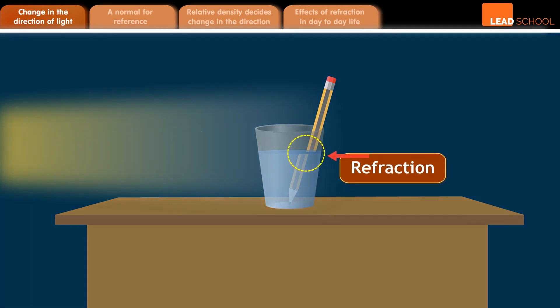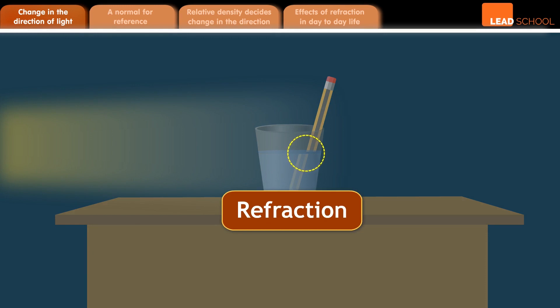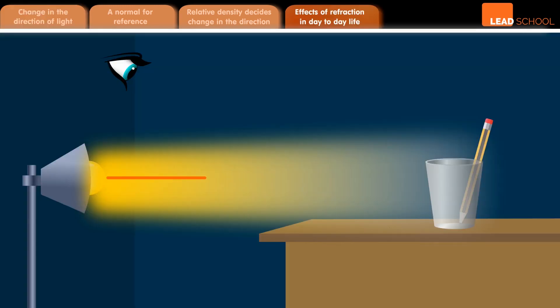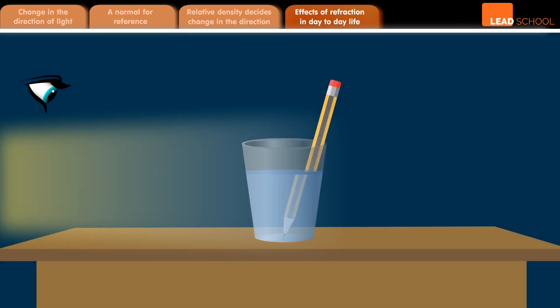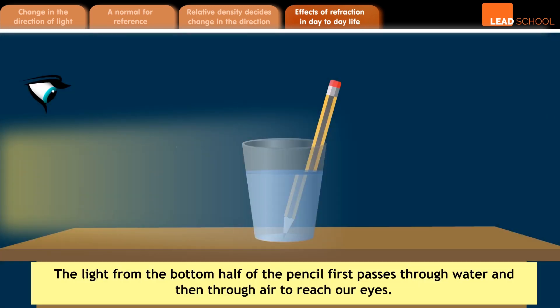Let us understand refraction in more detail. We know that we are able to see the pencil because the rays of light reflect off the pencil and reach our eyes. In this case, the light from the bottom half of the pencil first passes through the water and then through the air to reach our eyes.